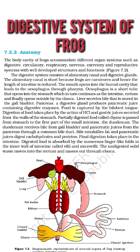The digestive system consists of alimentary canal and digestive glands. The alimentary canal is short because frogs are carnivores and hence the length of intestine is reduced.